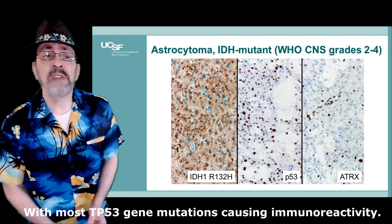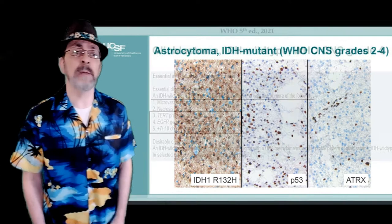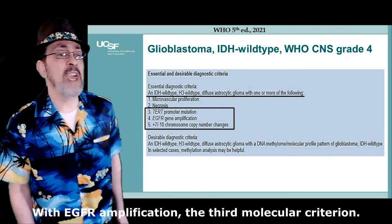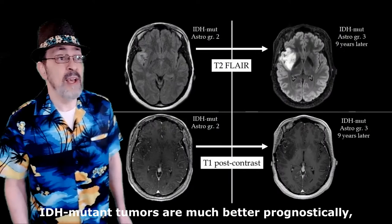loss of ATRX staining is key, with most TP53 gene mutations causing immunoreactivity. GBMs show a TERT promoter mutation, chromosome plus 7 and minus 10, with EGFR amplification — the third molecular criterion.